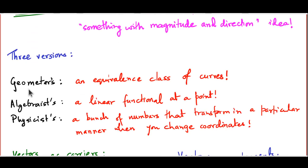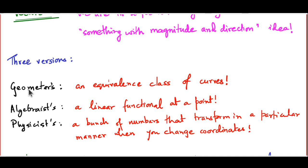Near the end of the last lecture we talked about three versions of the definition of a vector. We have the geometer's version, which I am going to briefly touch upon at the beginning of today's lecture - here we describe a vector basically as an equivalence class of curves. Then we come to the algebraic definition, which will take up most of our time in this lecture and perhaps the next one. This ultimately ends up saying that a vector is a linear functional defined at a point, implying that vector fields can also be thought of as differential operators - which sounds a bit crazy, so we will need some time to think clearly about what this really means.